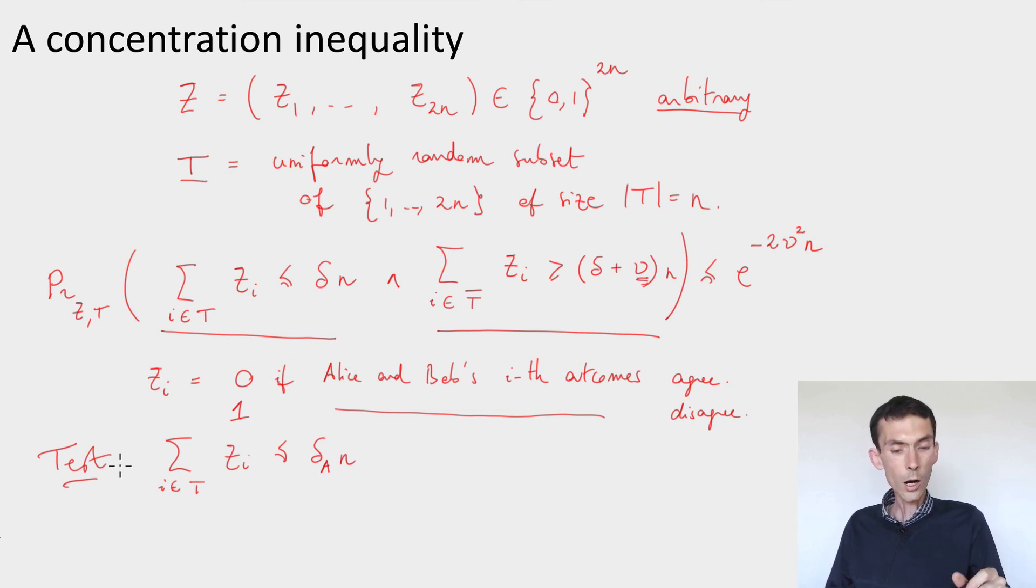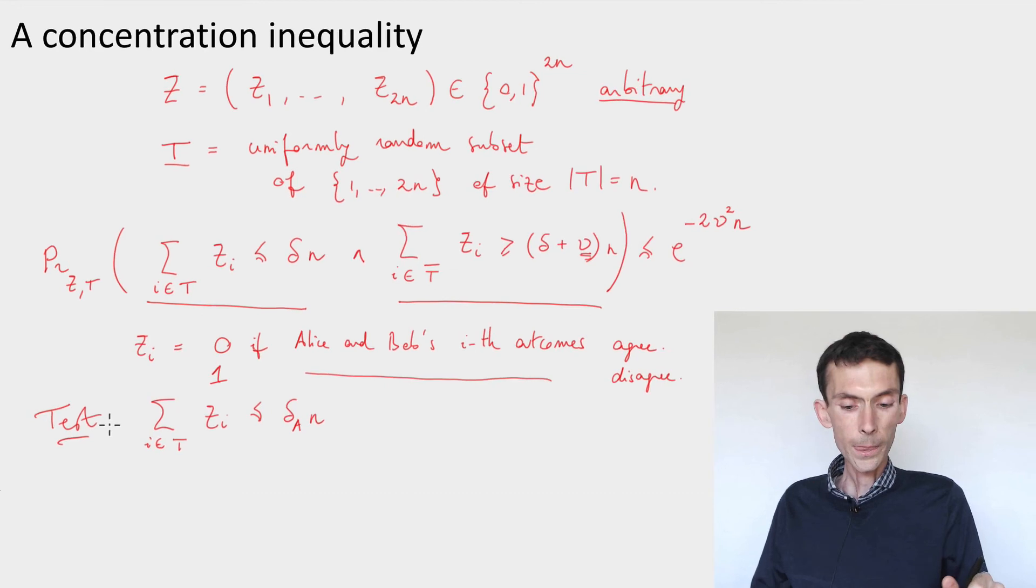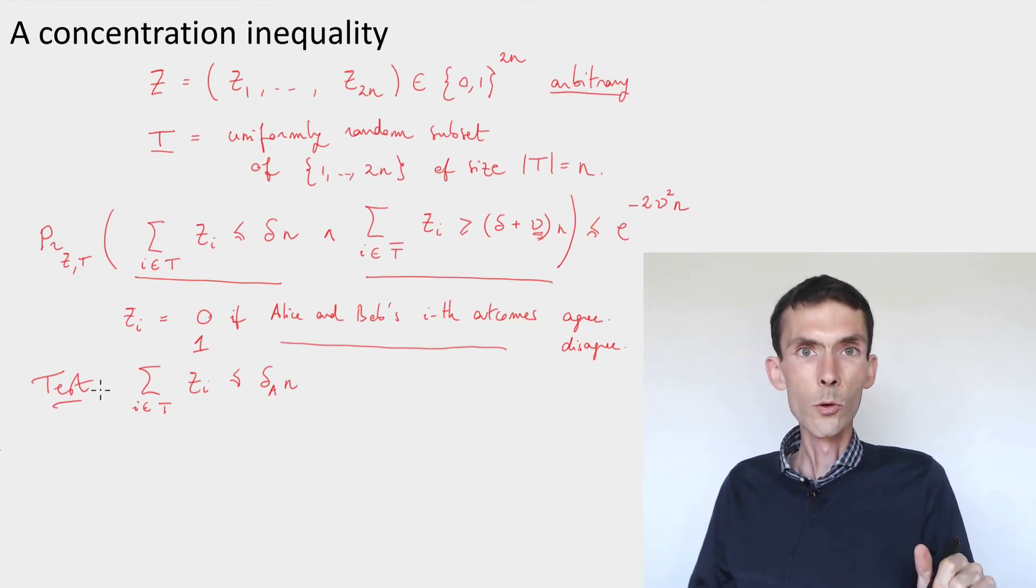then the chance that the number of errors in the rounds t-bar, so the complement of t, those rounds that are used for the raw key, is much larger than the observed error, is exponentially small. And using this, we'll be able to wrap up the analysis as we did in the previous video.